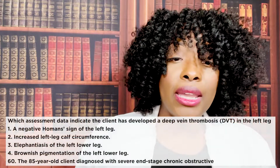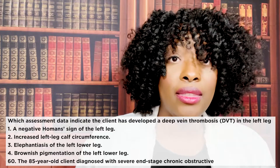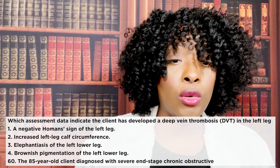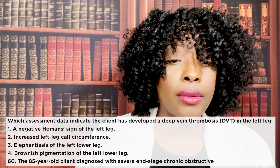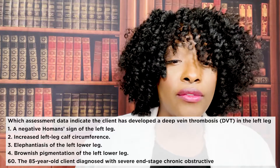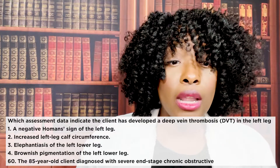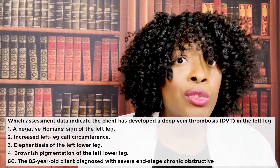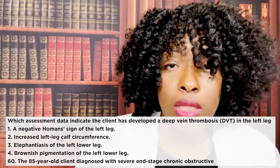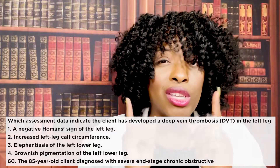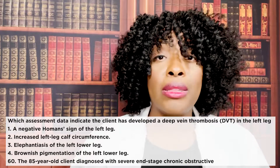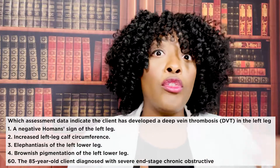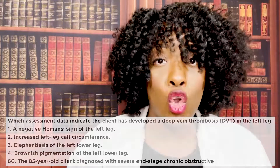Which assessment data indicates the client has developed a DVT in the left leg? The correct answer is two: increased left leg calf circumference. The circumference on that left leg has increased because of the DVT — that's why it's getting bigger and bigger. Notice how choice one tried to trick you — it said a negative Homans sign. Even a positive Homans sign is not definitively indicative of a DVT, but it does indicate further screening is needed.